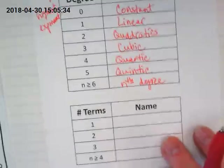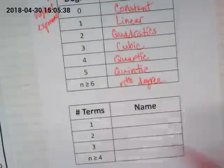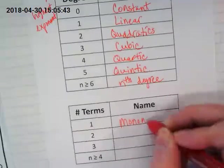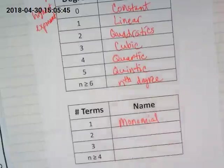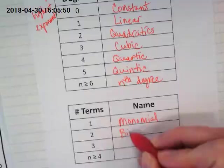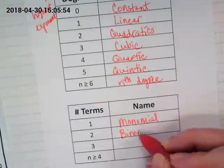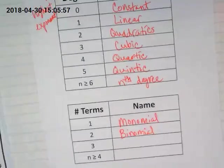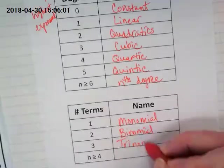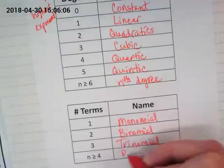Now the number of terms tells us what the last name is. One term is what we call a monomial, like monorail, just one. Binomial for two. Three is trinomial. And anything beyond three, we just call it a polynomial.